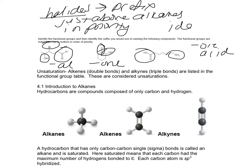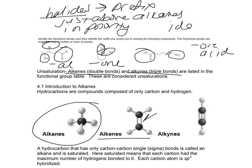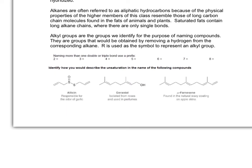When we look at unsaturations, we're looking at double bonds and triple bonds. Here we have a saturated hydrocarbon, which is an alkane. Then we have an alkene, where we have the double bond, and then an alkyne, which has a triple bond. If we have more than one double bond or triple bond, we have to use a prefix: two is di-, three is tri-, four is tetra-, five is penta-, six is hexa-, seven is hepta-, eight is octa-.